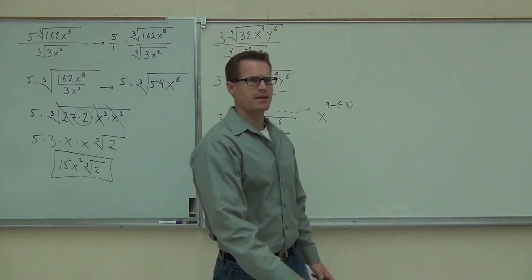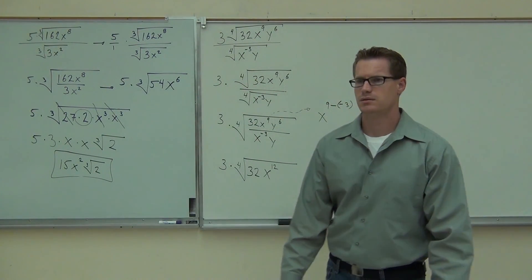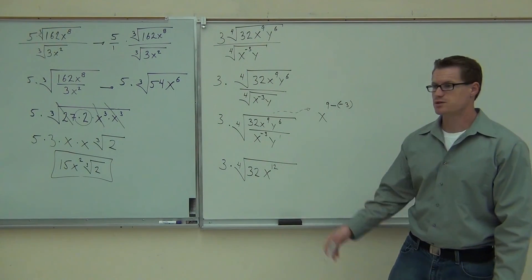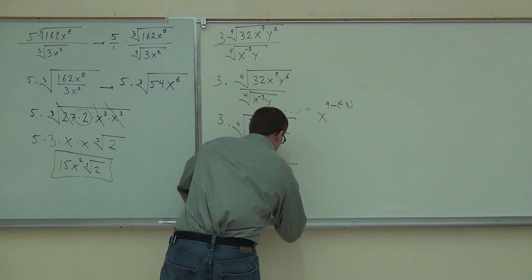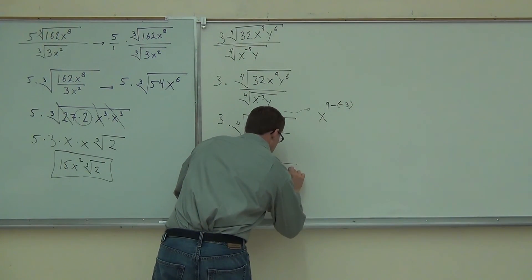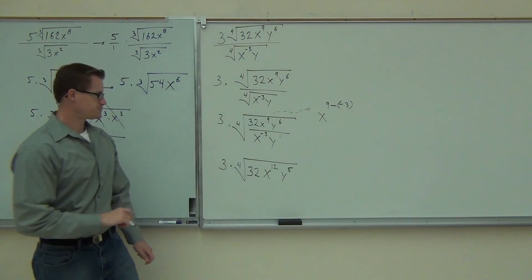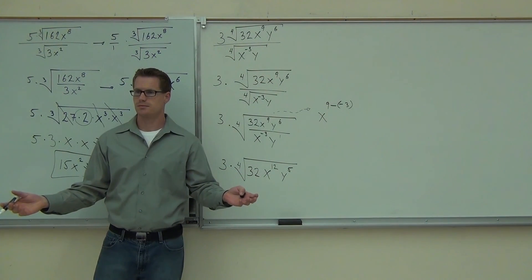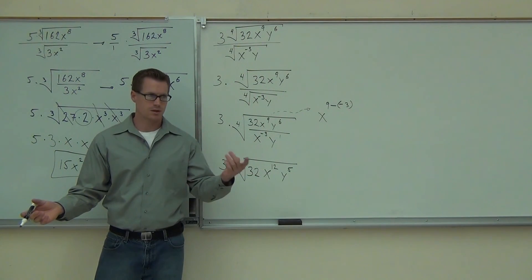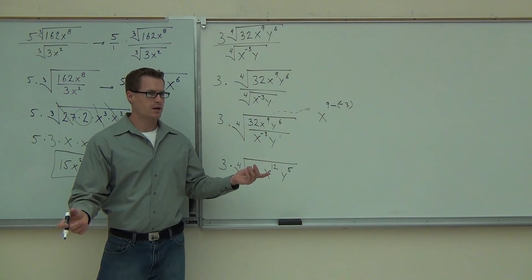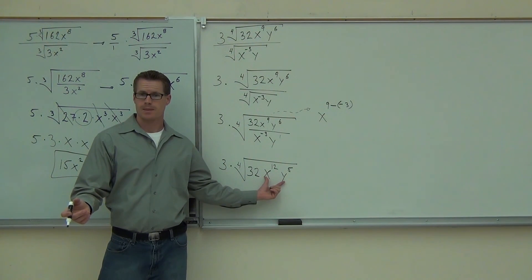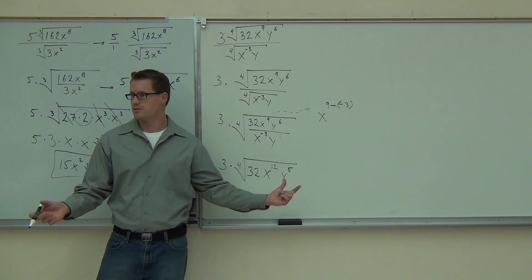How about the y? That has a power of one, even though we don't show it. So we do 6 minus 1, that gives us y to the fifth. Now you have to break apart 32 so you can get a fourth power out of it. And we've got to check — can we simplify these? The powers are greater than the root, so we can do that.